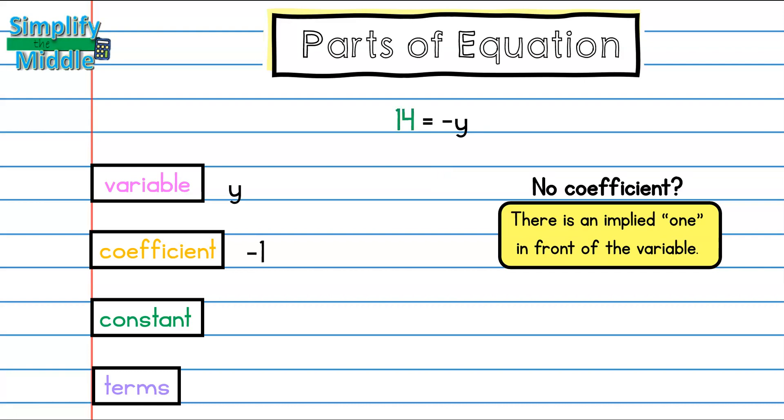My constant in this problem is 14, and I have a term that is on this side and one on this side. So I have two terms, which are 14 and negative y.